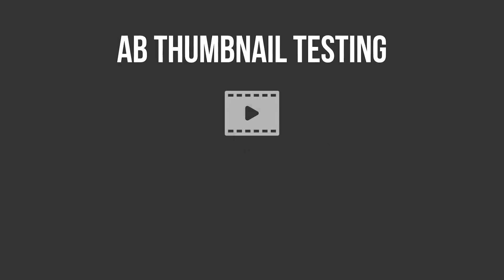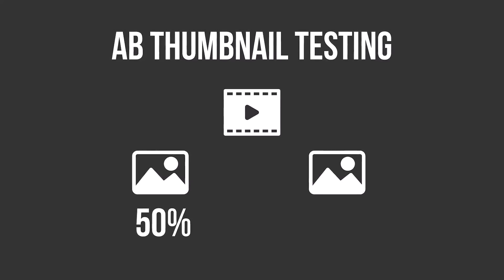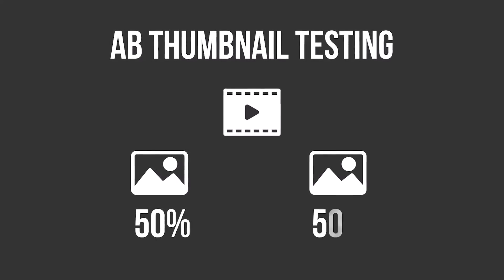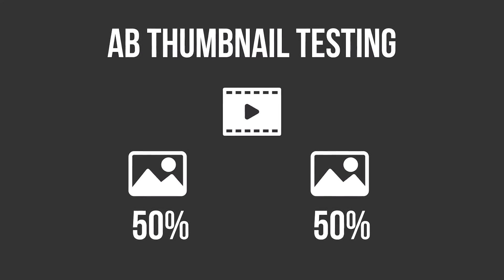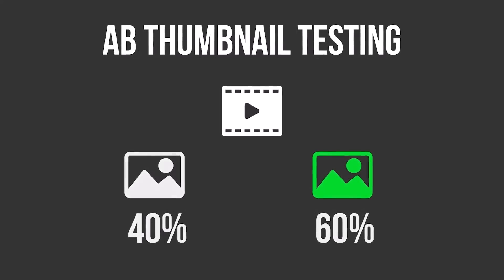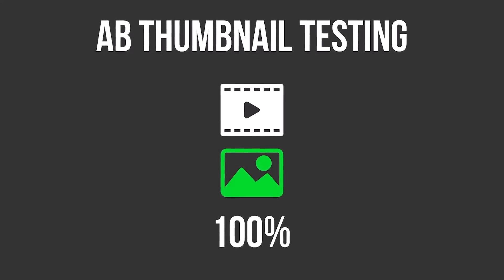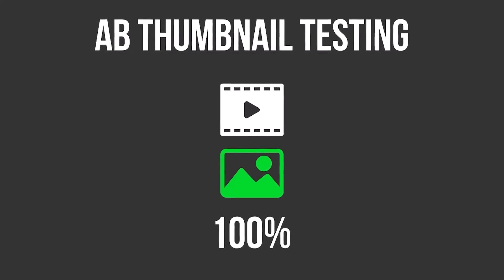In very simple terms, AB thumbnail testing works like this. For one video, you upload two thumbnails and YouTube shows 50% of users one thumbnail and 50% of users the other thumbnail. After a testing period, the thumbnail with the best performance is used for 100% of users going forward, unless you decide to do another test. So when entering this video, you saw thumbnail A, but you saw thumbnail B.